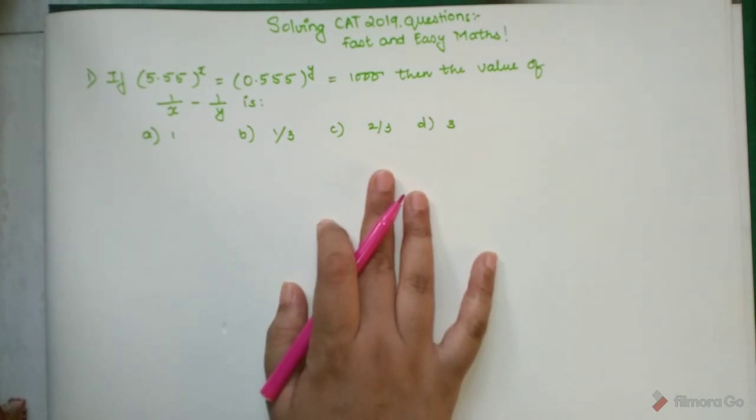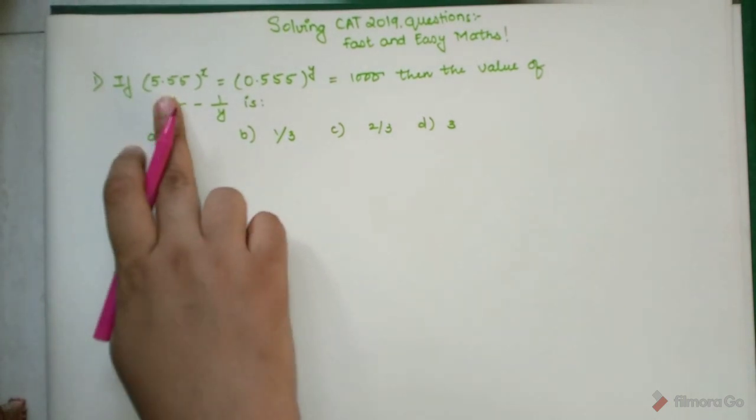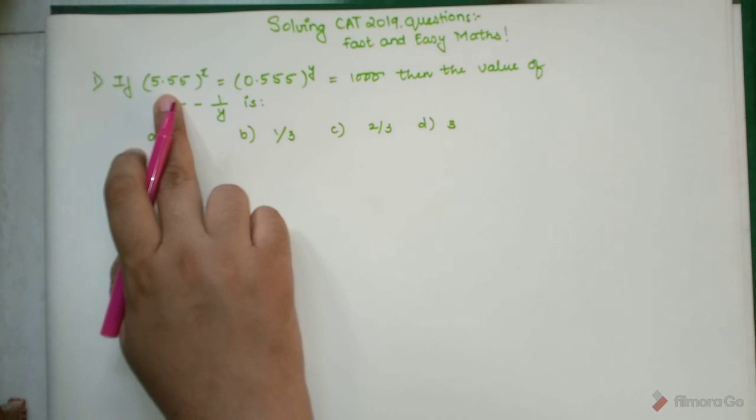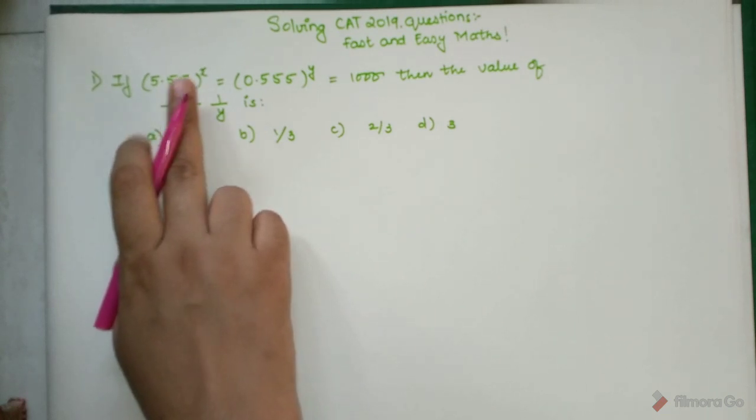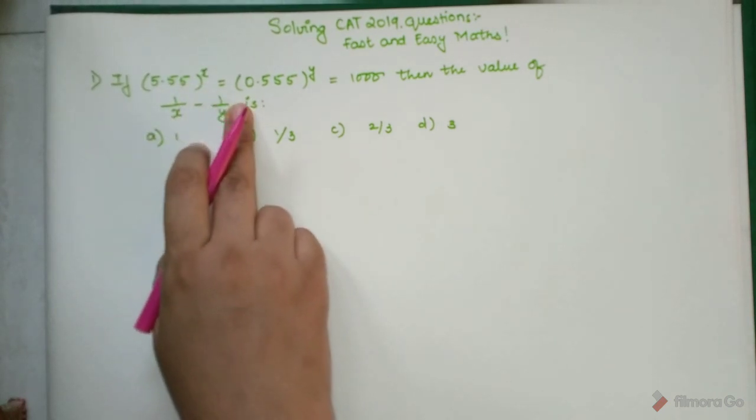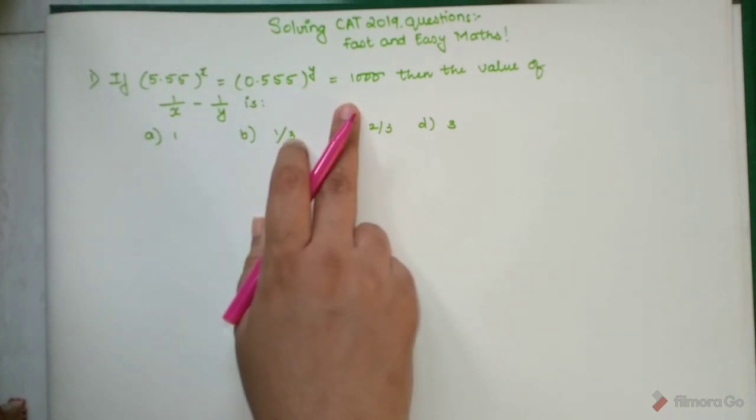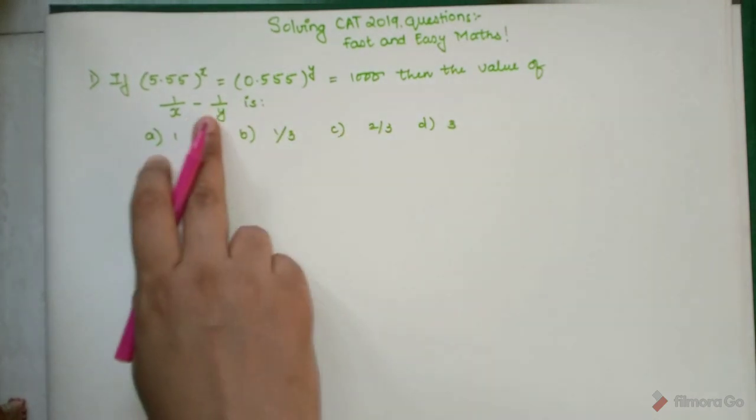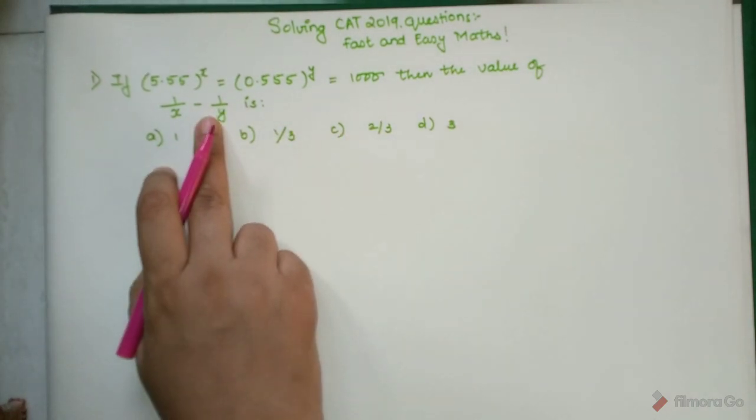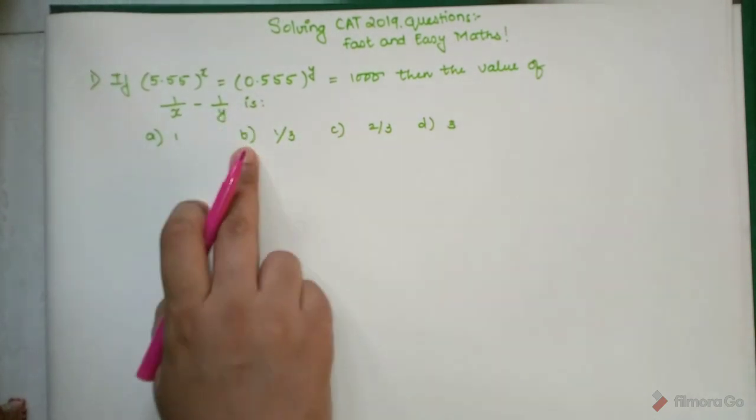Now the question is: if (5.55)^x = (0.555)^y = 1000, then the value of 1/x - 1/y is?